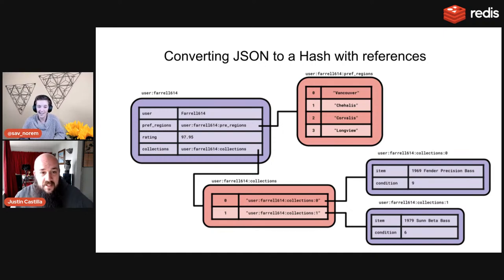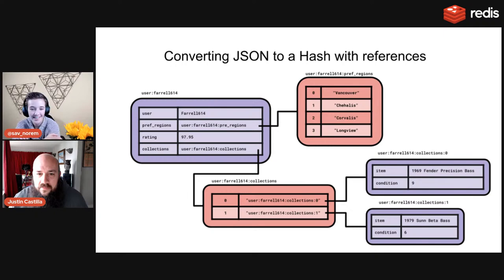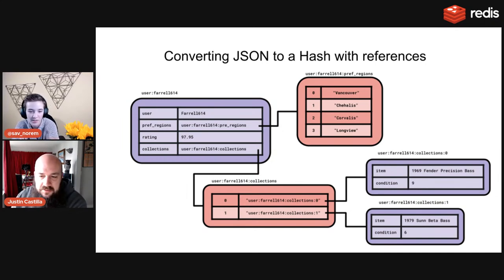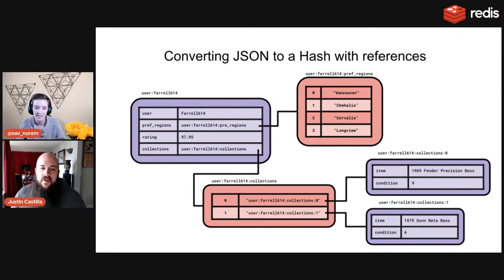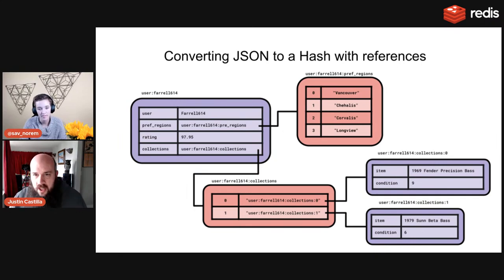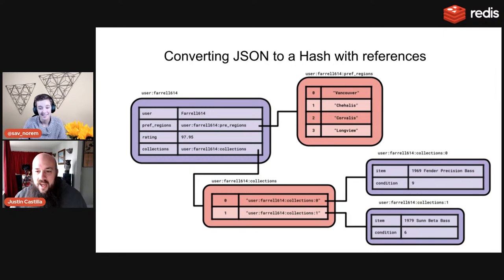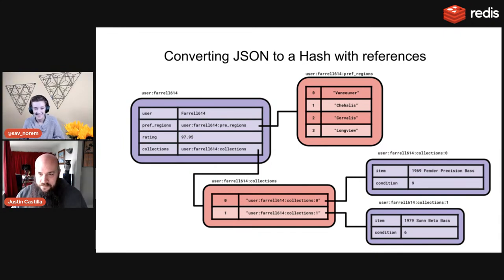The challenge is that everything is parted out into individual data types. How do you get it all back into one thing? How do you tie Vancouver back to the item you're trying to sell? To retrieve all this data you'd need at least one call to get the user hash, another for pref_regions, a third for the list of object references, and then additional calls for every object's hash. It's a pain — everything is flattened and it's still slow.